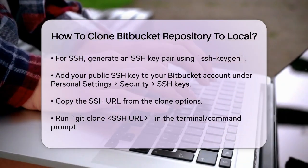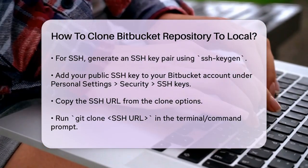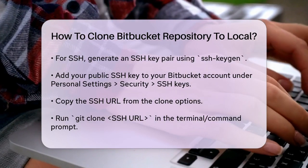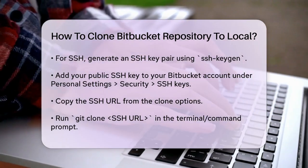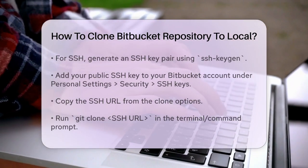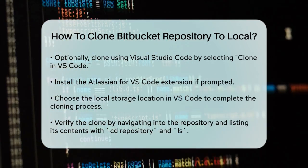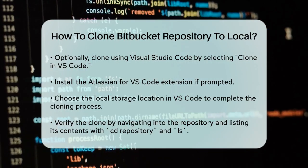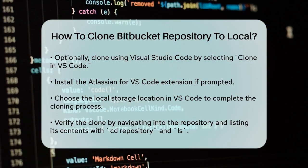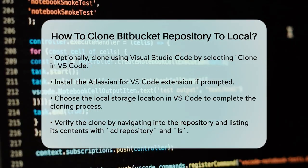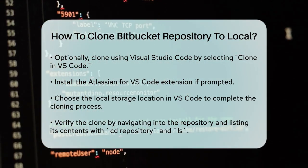Using Visual Studio Code: If you prefer using a graphical interface, you can also clone the repository using Visual Studio Code. After clicking the Clone button, select the Clone in VS Code option. If you don't have the Atlassian for VS Code extension installed, you'll be prompted to install it. Once installed, select Clone a New Copy from the drop-down menu in VS Code. Choose the local storage location and select the Select Repository Location button. You may need to log in to your Bitbucket account to complete the process.